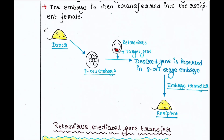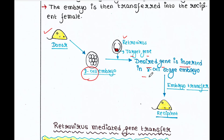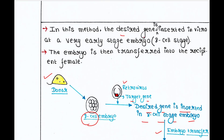Here we have the donor mouse, which is pregnant, and we can isolate its embryo at a very early stage — the 8-cell stage embryo. We also have the retrovirus into which we have already put our gene of interest. We mix this retrovirus with the 8-cell embryo; the retrovirus attacks the cells and injects its content into them, so the desired gene is now inserted into the 8-cell stage embryo. Then the embryo is transferred to the recipient mouse.